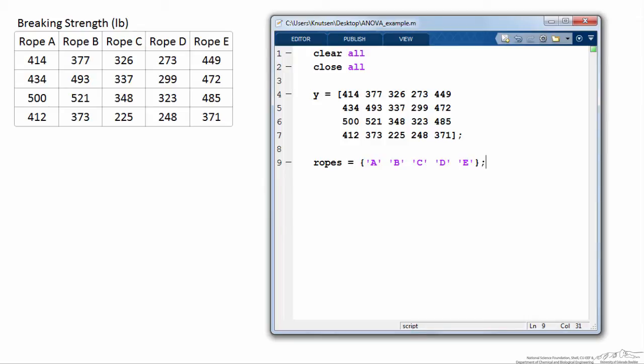So each column contains four measurements, and each row contains data from the five ropes. And I've also made a cell array called ropes, in which I've labeled each rope A through E.